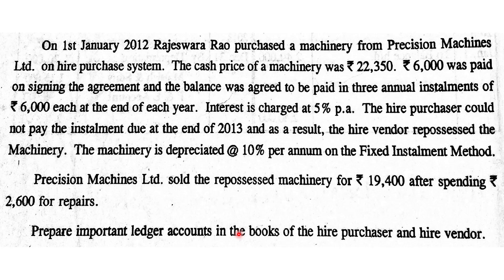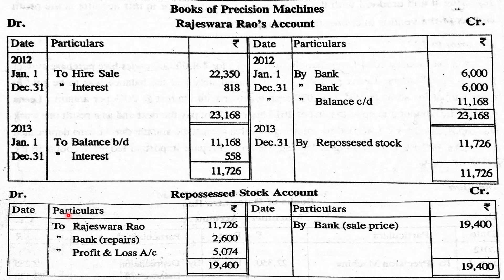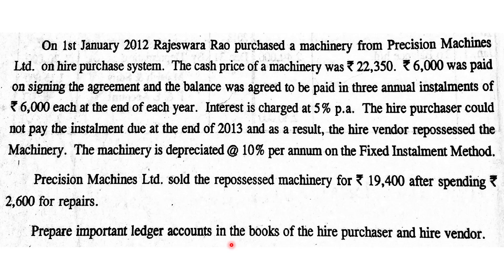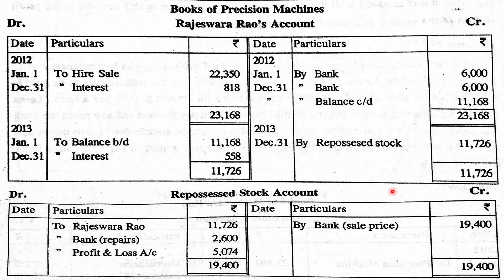As stated in the question, ₹2,600 was spent on repairs — debited to Repossessed Stock Account. The machinery was then sold for ₹19,400: Bank Account Dr. to Repossessed Stock Account — ₹19,400. The balancing figure of ₹5,074 represents the profit, transferred to the Profit and Loss Account. This completes the complete repossession.